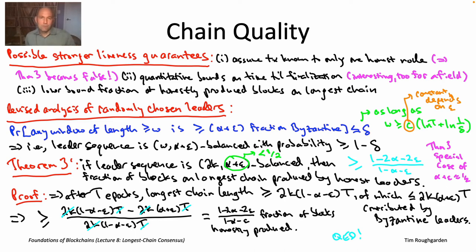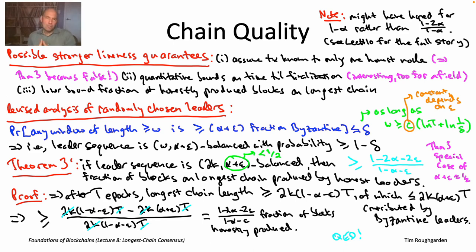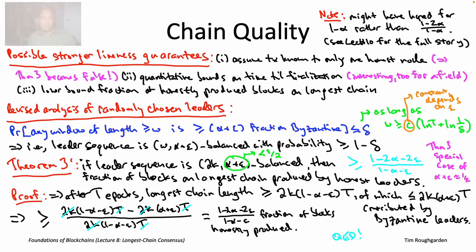You might wonder if this is an artifact of the proof and a smarter argument would give us the 1−alpha fraction we might hope for. But in fact, we'll see that (1−2α)/(1−α) is exactly the right answer for chain quality, at least under our assumptions of Byzantine behavior and arbitrary tie-breaking by honest nodes. We'll actually see that in a different context — in the context of Selfish Mining in lecture 10. So this ratio will be showing up again. There are ways, at least in principle, to add complexity to the basic longest chain consensus protocol to boost the chain quality from (1−2α)/(1−α) up to 1−α, and there are research papers outlining how. But as far as I know, all major deployed longest chain consensus protocols have only this weaker chain quality guarantee.